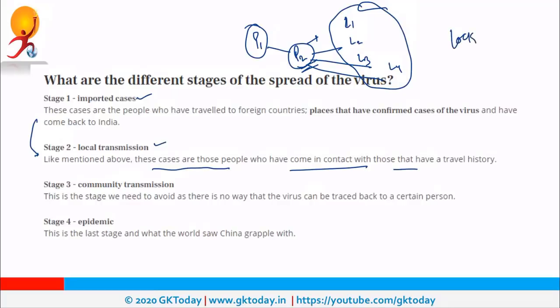Recently, the Prime Minister announced a 21-day lockdown to prevent community transmission. It can be stopped with the help of social distancing — if people are not going to interact much, the spread can be stopped because the interaction between P2 and various other locals is stopped due to social distancing and self-isolation.